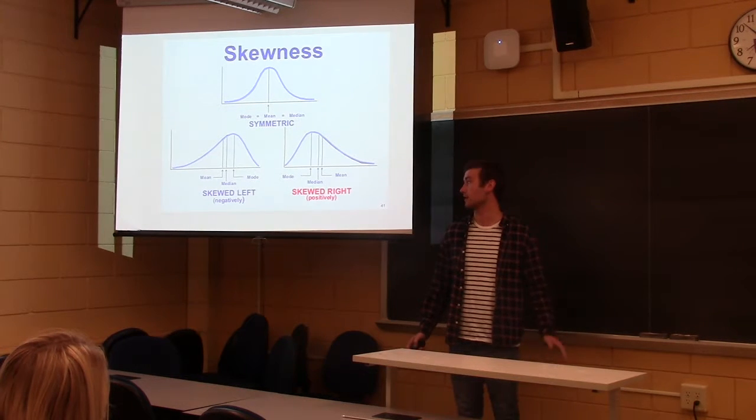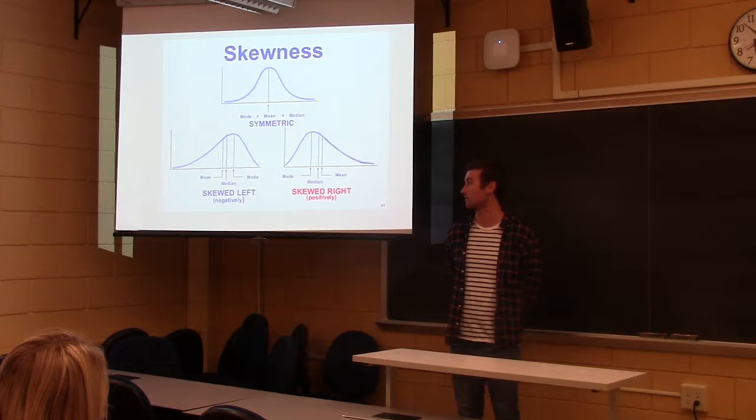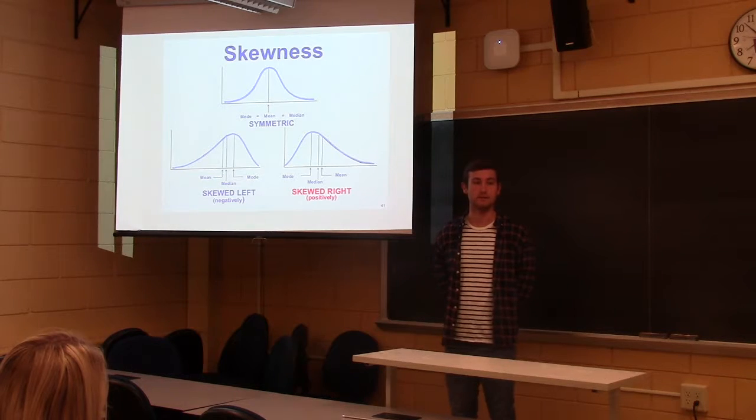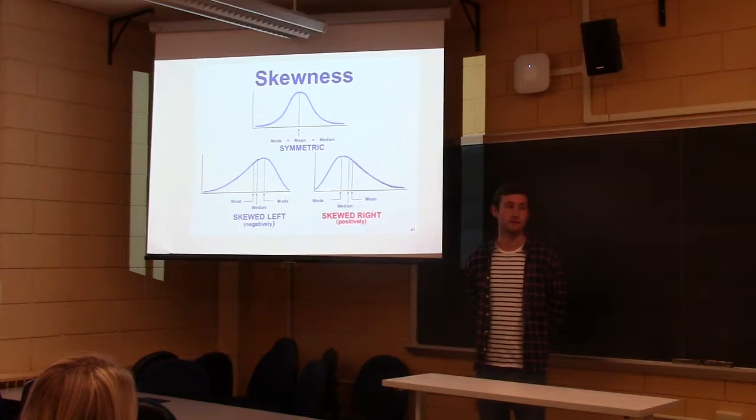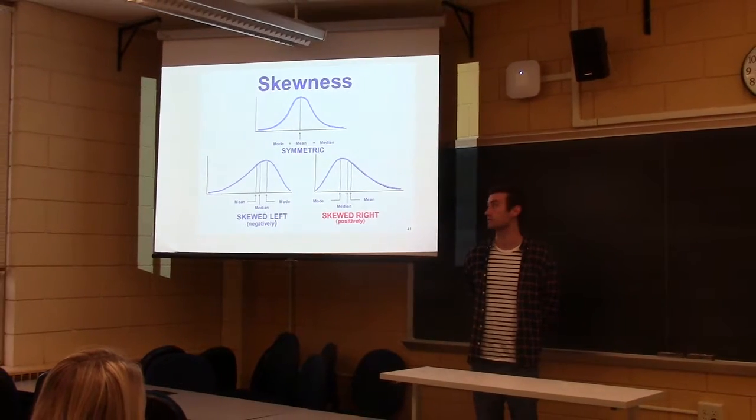So if you're skewed left, that means the distribution of the variable has a lot of small outliers and the mean is less than the median. They call it left skew because the mean is to the left of the median in the distribution.